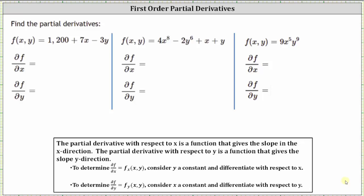For the first example, we are given f(x, y) = 1200 + 7x - 3y. To find the partial of f with respect to x, we treat y as a constant and differentiate with respect to x. The derivative of 1200 with respect to x is equal to zero. Remember, the derivative of any constant is equal to zero.